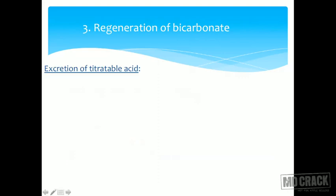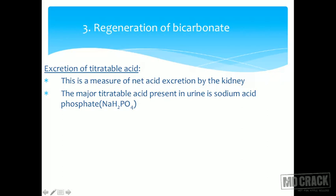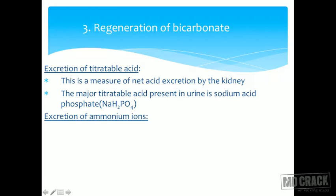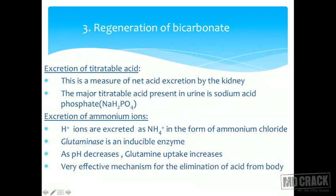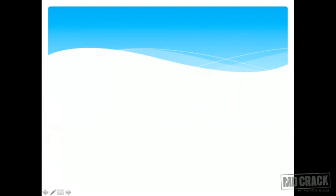Excretion of titratable acid is a measure of net acid excretion by the kidney. The major titratable acid present in urine is sodium dihydrogen phosphate (NaH2PO4). There is also excretion of ammonium ions — protons are excreted as ammonium, in the form of ammonium chloride. Glutaminase is an inducible enzyme, and as pH decreases, glutamine uptake increases — this is a very effective mechanism for the elimination of acid from the body.